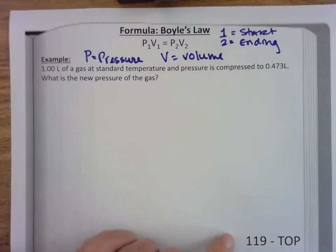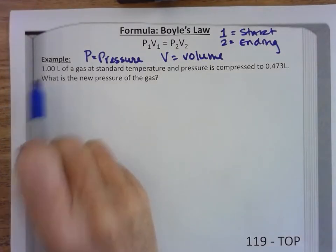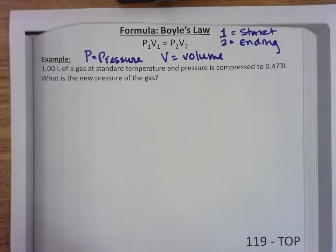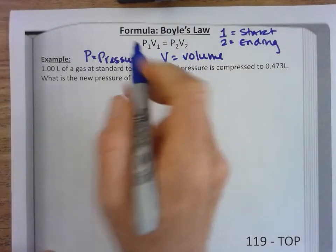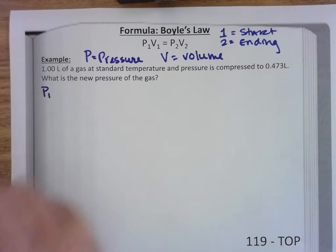This question says I have one liter of a gas at standard temperature and pressure and it is compressed to 0.473 liters. What is the new pressure of the gas? Just like all math that we're going to do, the best thing to start with is listing the variables.